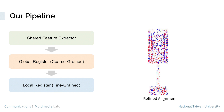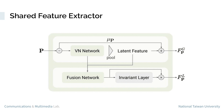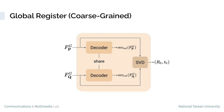The shared feature extractor first encodes both SE3 equivariant and invariant features. Next, the global register takes the equivariant features and coarsely aligns the point clouds by global feature alignments.